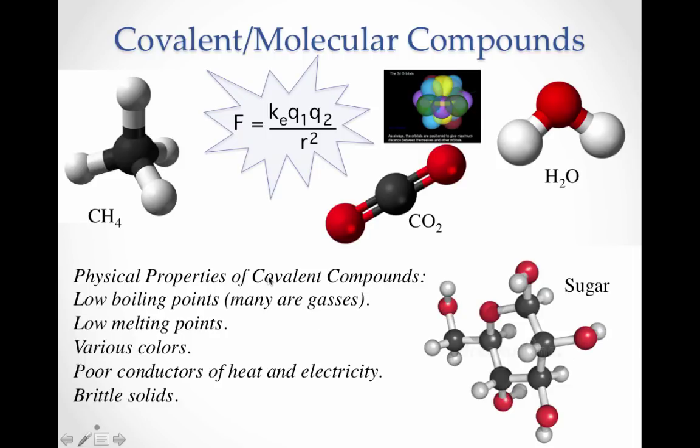So covalent molecular compounds have some very interesting properties. They have low boiling points—their bonds aren't as strong, so they can be broken apart, and often they end up as gases because of that. They don't stick together too vigorously. They also have low melting points and various colors. They're poor conductors of heat and electricity, and they usually make up brittle solids when they are in a solid state.